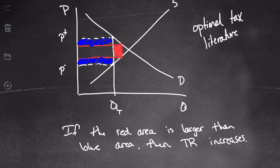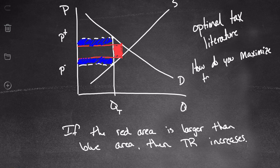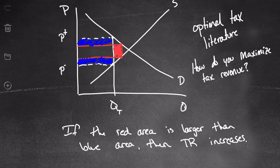There's a nice calculus exercise you can do to figure out how to maximize tax revenue — it has a really elegant solution, but calculus isn't a prerequisite for this class. The key takeaway is that you cannot raise taxes indefinitely and keep increasing tax revenue. Anyone who says yes is clearly wrong. But depending on where you are on the Laffer Curve, you might be able to raise taxes and increase revenue.